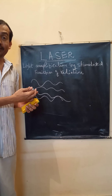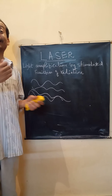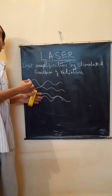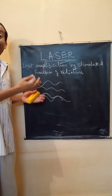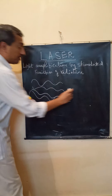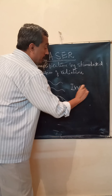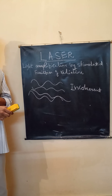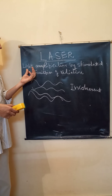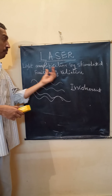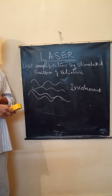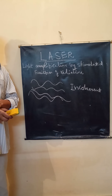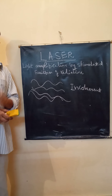Lack of this connectivity is called incoherent. Ordinary light is incoherent because the waves released from the atoms of the source are not in phase. Such light is said to be incoherent — waves are not in phase, there is no connectivity. But laser — Light Amplification by Stimulated Emission of Radiation — is coherent, is monochromatic, is highly intense, and is unidirectional.